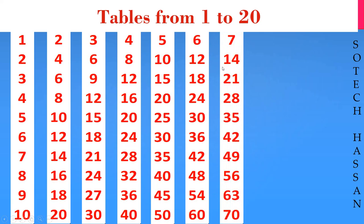7 2s are 14, 7 3s are 21, 7 4s are 28, 7 5s are 35, 7 6s are 42, 7 7s are 49, 7 8s are 56.